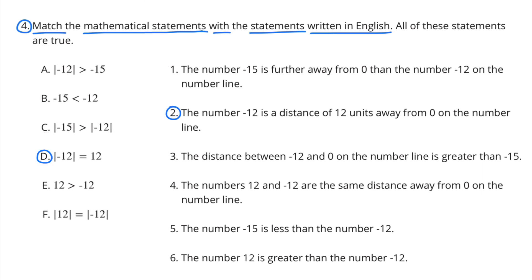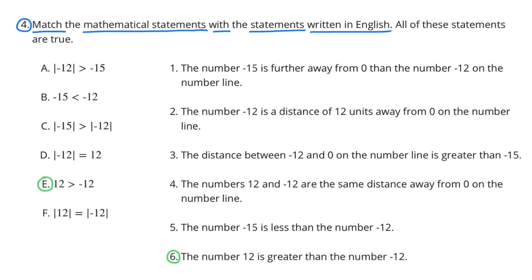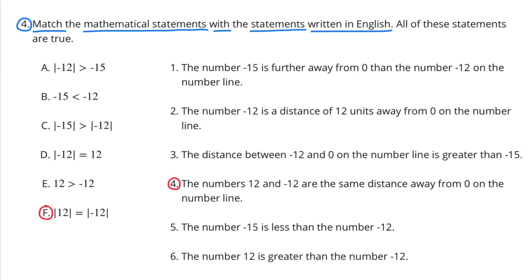D. The absolute value of negative 12 equals 12 — that matches with statement 2: the number negative 12 is a distance of 12 units away from 0 on the number line. E. 12 is greater than negative 12 — that matches with statement 6: the number 12 is greater than the number negative 12. F. The absolute value of negative 12 equals the absolute value of 12 — that matches with statement 4: the numbers 12 and negative 12 are the same distance away from 0 on the number line.